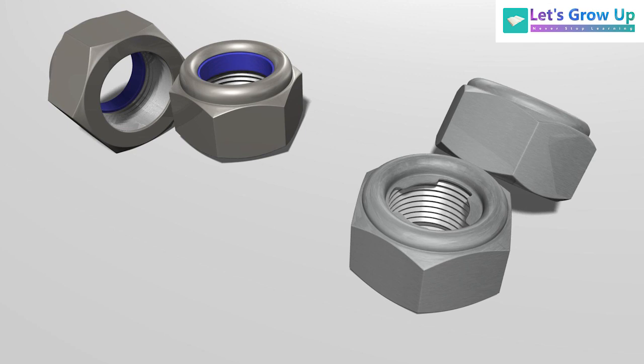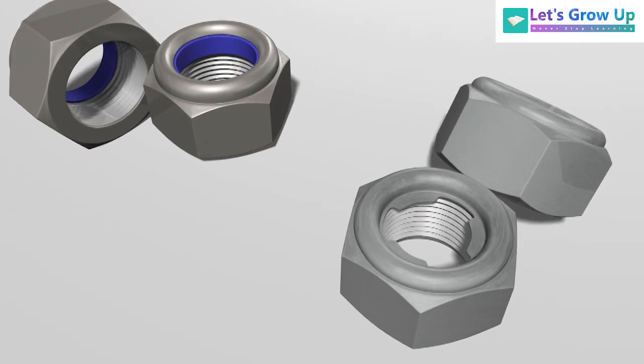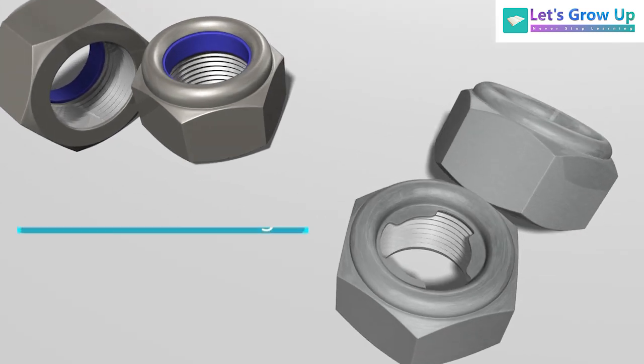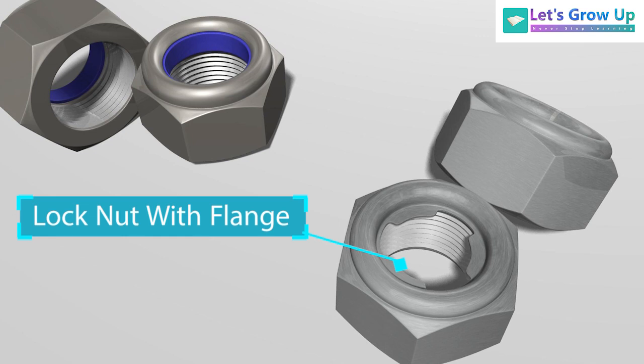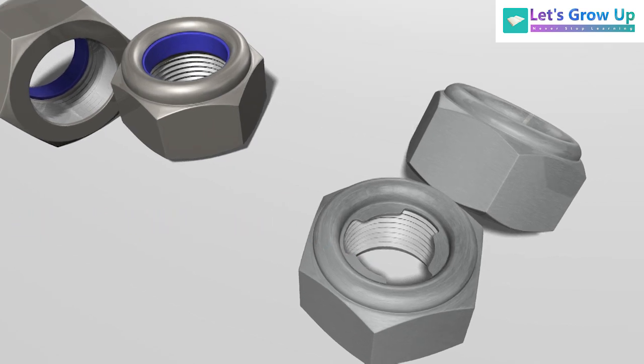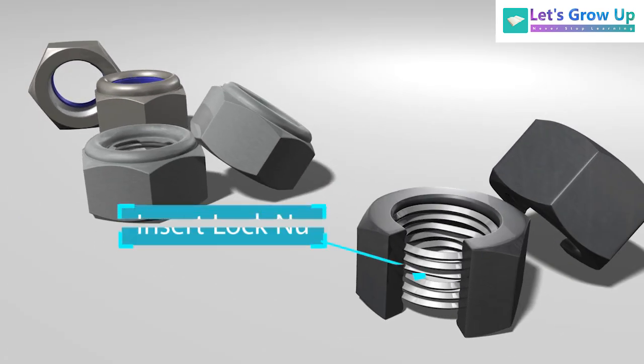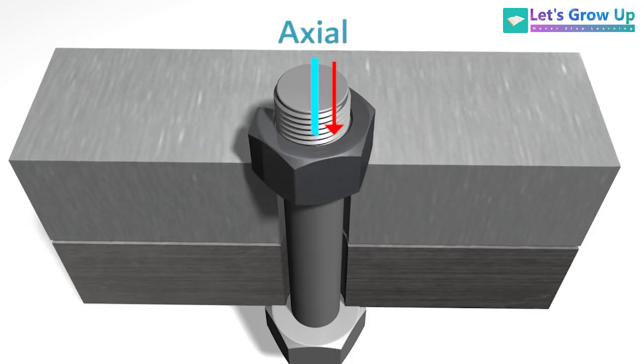This is a nylon lock nut that has a polymer collar inserted. This is a flange inserted lock nut, also called a self-locking nut. This is a self-locking inserted lock nut, and this insert works with the bolt's axle and radial direction.